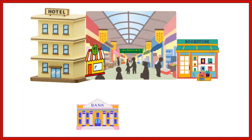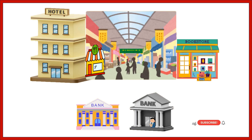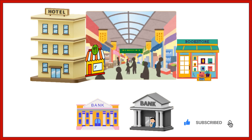Here you can see two banks. A bank is a safe place to keep your money. You can deposit money into your bank account — this means putting your money in the bank for future use. Whenever you need your money, you can withdraw it from the bank. Withdrawing money allows you to use your savings when needed. Banks help manage your money safely and securely.